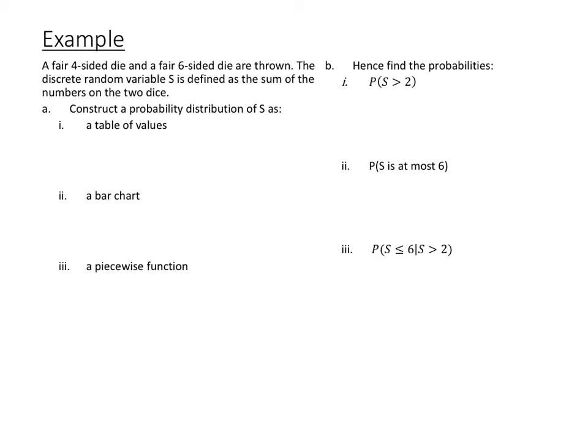For this next example, we're throwing a fair four-sided die (1–4) and a fair six-sided die (1–6). The discrete random variable S is defined as the sum of the two numbers. We want to construct a probability distribution of S as a table of values and a bar chart. I suggest making a sample space diagram of all possible sums, then using that to create the table and bar chart.